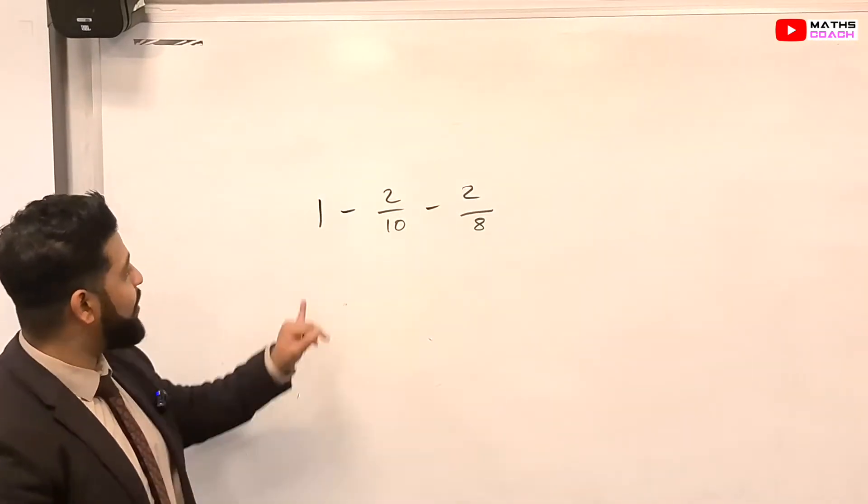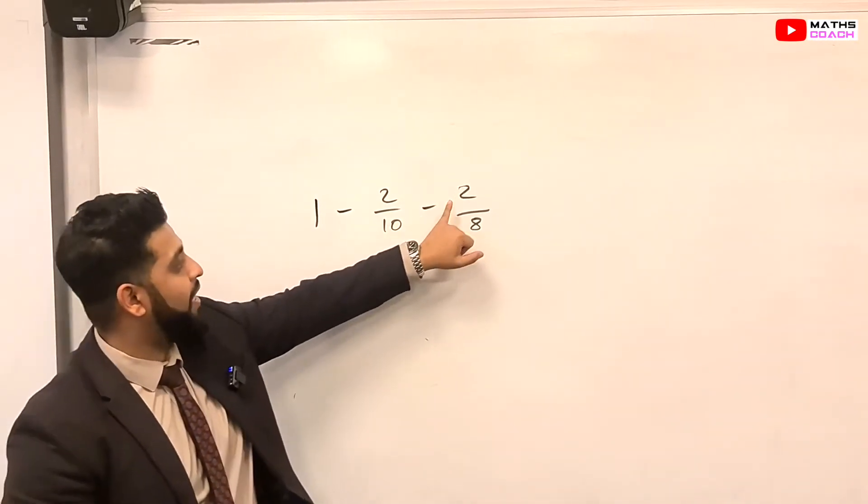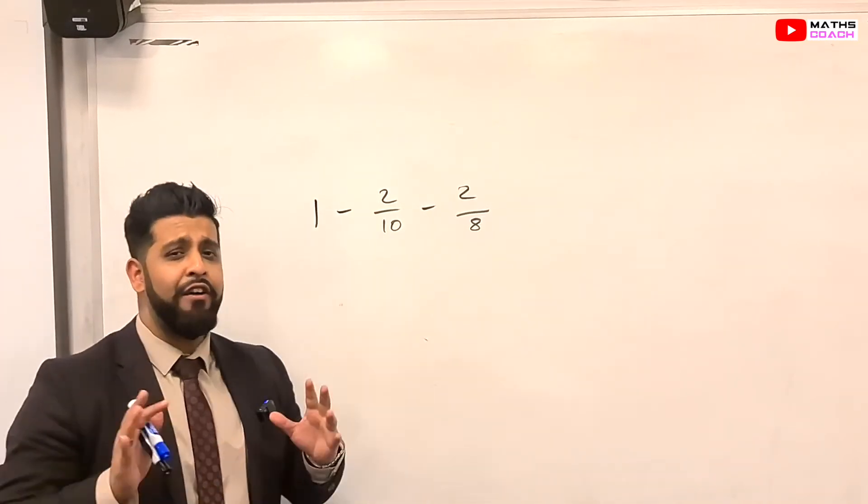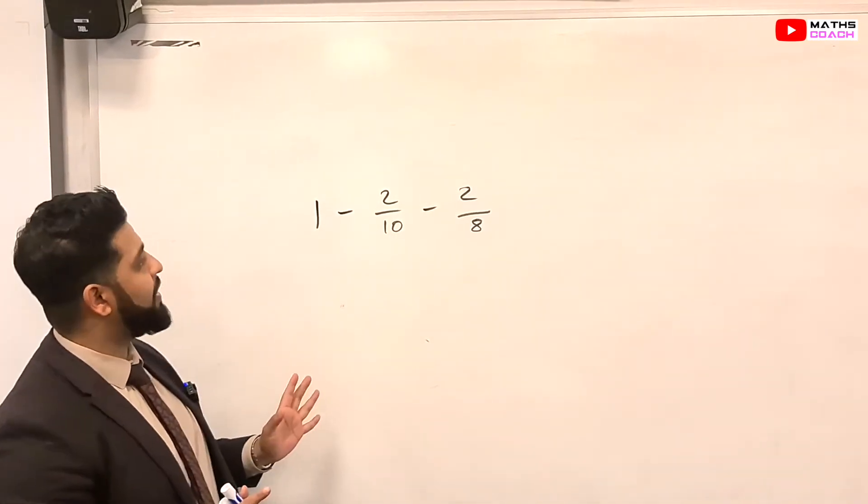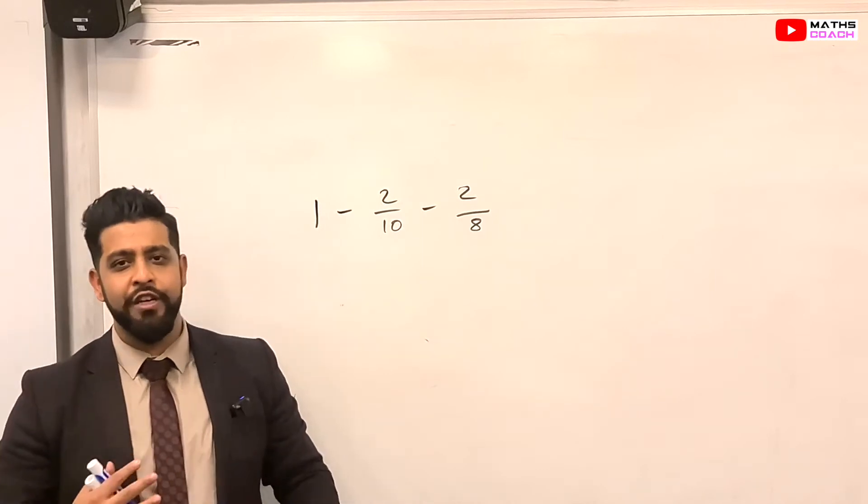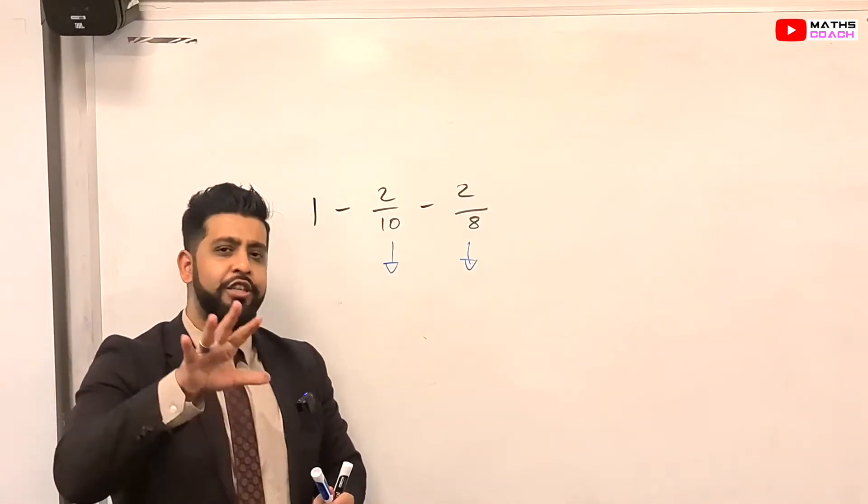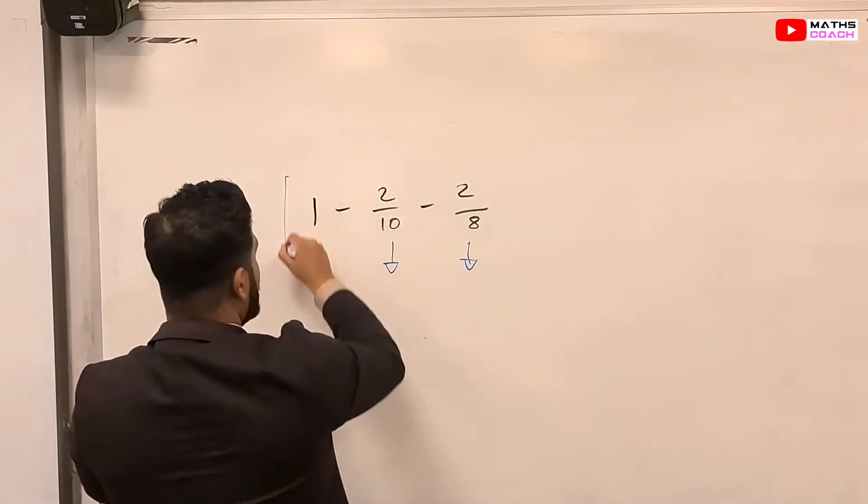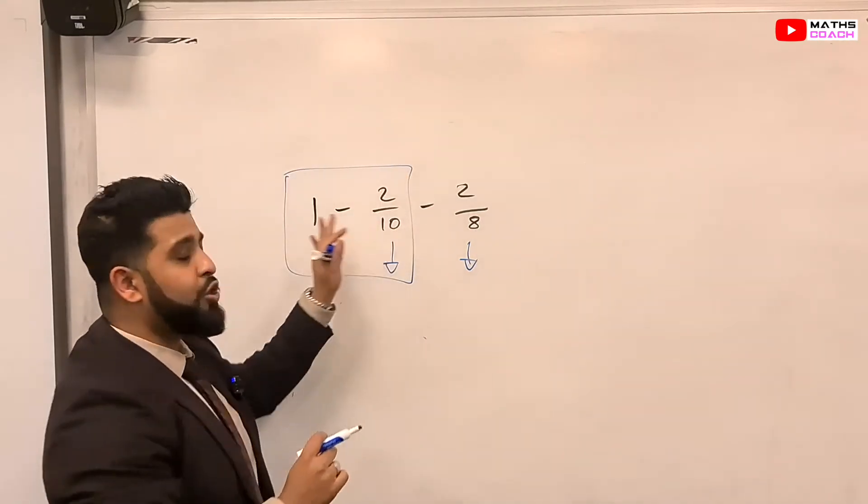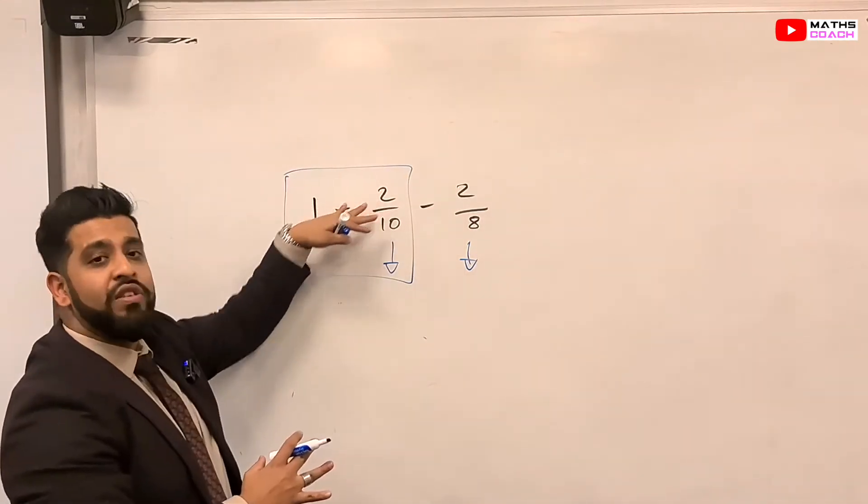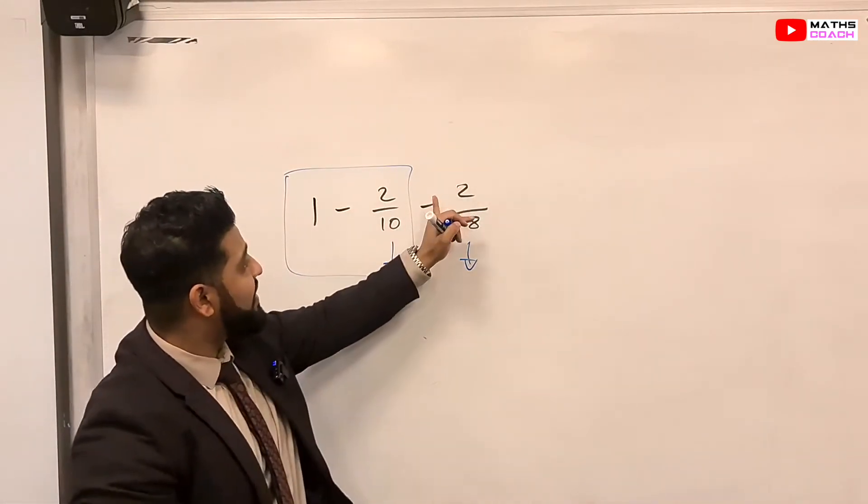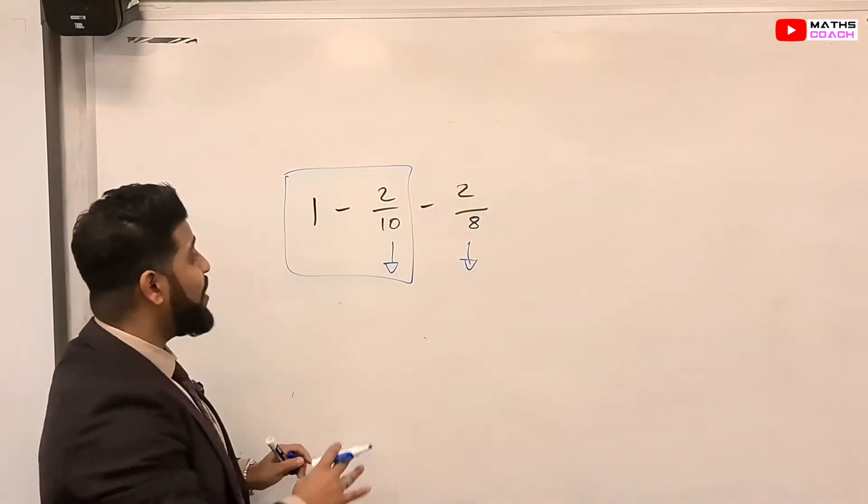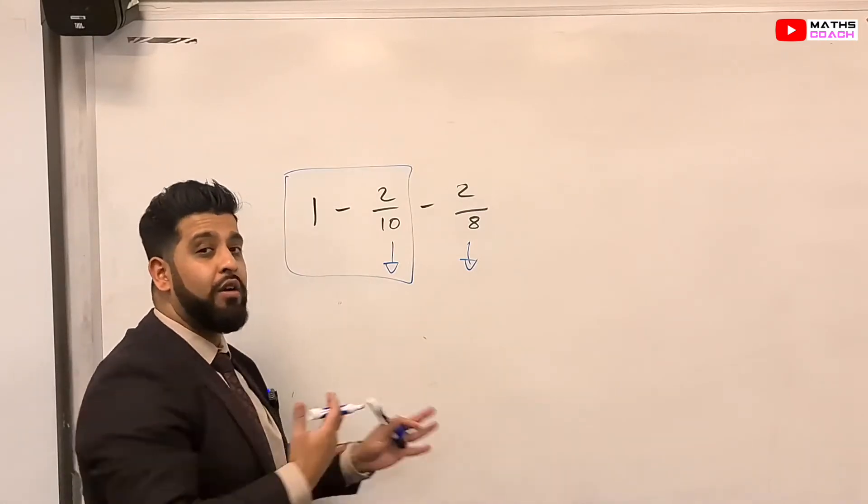Now, let's look at this one here on the board. We have 1 minus 2 over 10 minus 2 over 8. Now, at first glance, you might think, what's going on here? Do we have two fractions? Do we have three numbers? There are two ways that you can actually deal with this. You can actually just choose to deal with these two on their own, get the result and then take away 2 over 8. Or you can deal with it in one go.